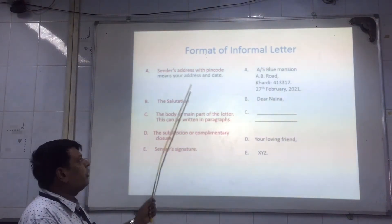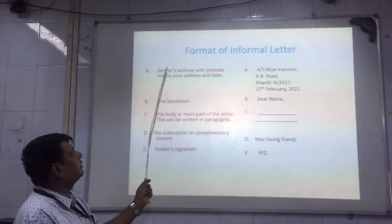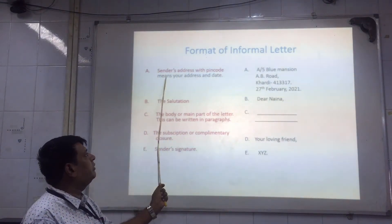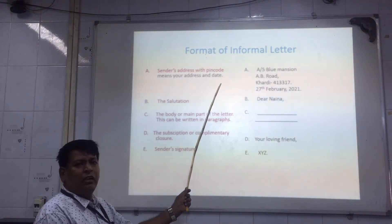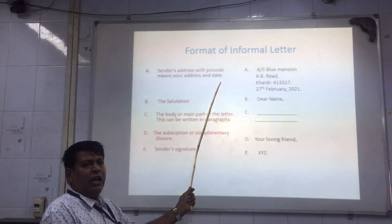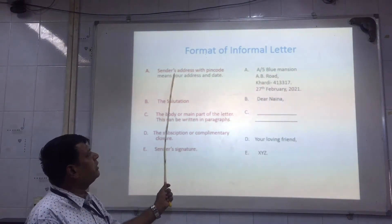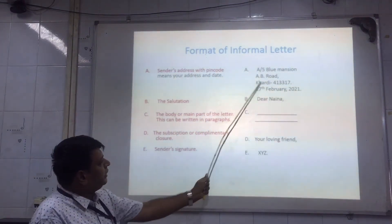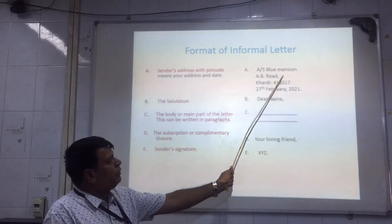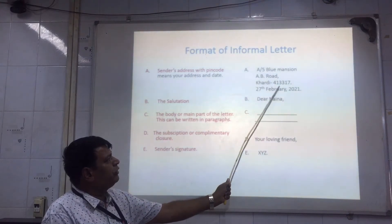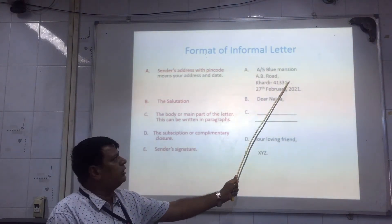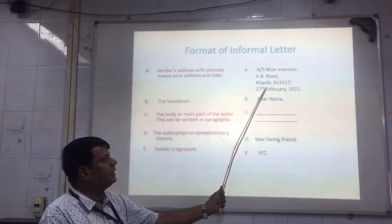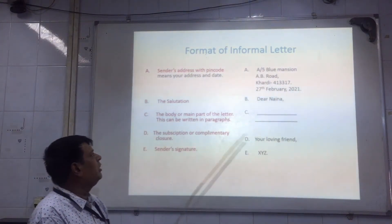Let me repeat the format again. In Part A, write your sender's address with the pin code — for example, A5, AB Road, 413317 — and the date below that: 27 February 2021.